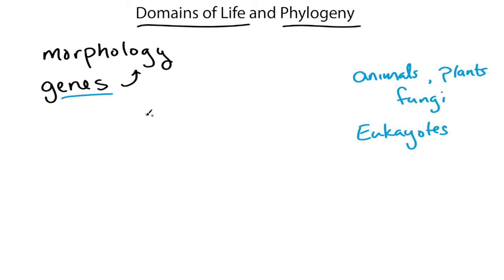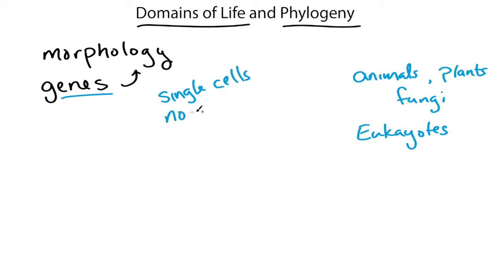On the other hand, we have organisms that are mostly single-celled. Sometimes the cells are grouped together with sheaths around them, but they don't have the same differentiation that animals and plants do, and they have no nucleus. That lack of a nucleus is what distinguished them from the eukaryotes, and they used to be called prokaryotes.